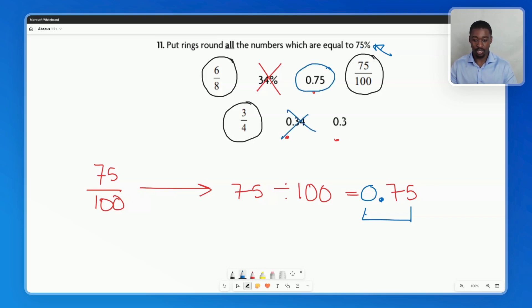So now we know it's not this, it's not this, but this is the correct decimal that represents 75%. So here are our answers: 75 over 100, three quarters, six over eight, and 0.75.